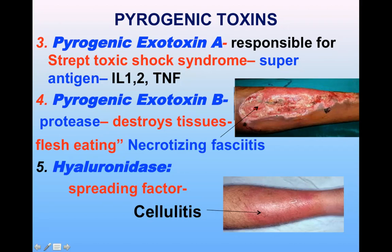In necrotizing fasciitis the tissue is destroyed and eaten up. This is different from cellulitis, where there is infection under the skin but no destruction of tissue. The spreading factor hyaluronidase causes cellulitis, while pyrogenic exotoxin B causes the destructive necrotizing fasciitis.